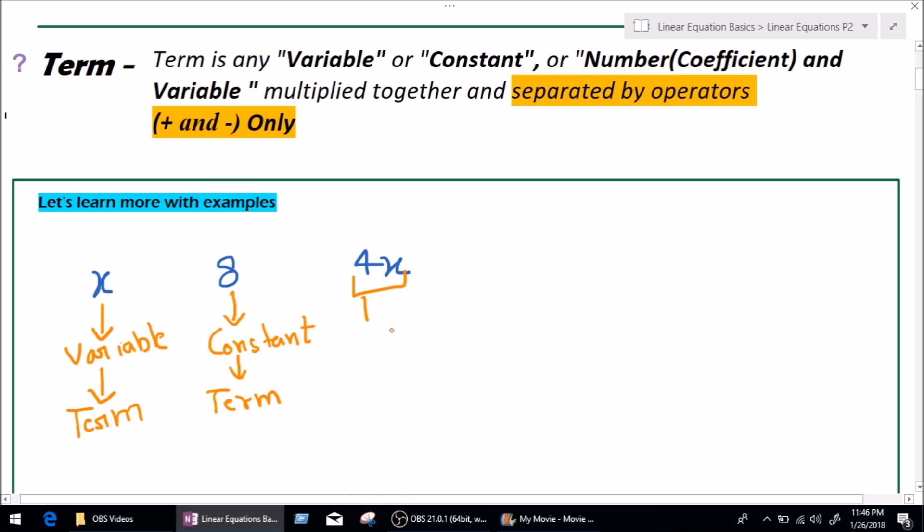What about this 4x? 4x basically is 4 multiply x. So, what is 4? 4 is a coefficient. And, what is x? x is, of course, the variable.